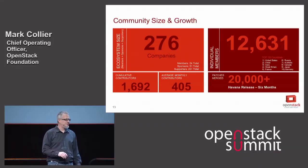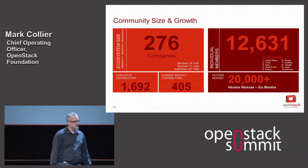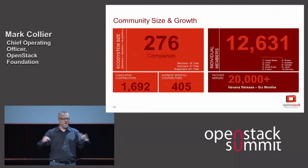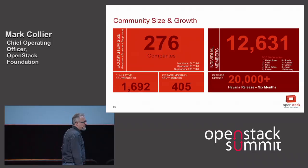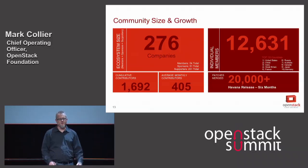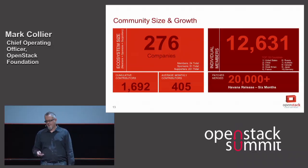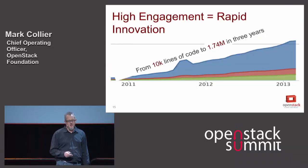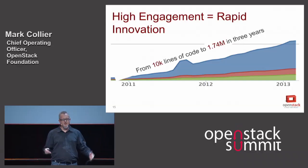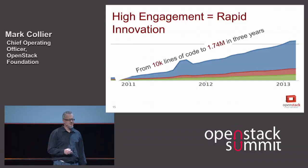We think of our community as having many different stakeholders: developers, users — perhaps the most important — and our ecosystem. We've already seen over 1,600 contributors, about 400 a month. Here are just a few of the companies in our ecosystem — a lot of names you'll recognize. All that engagement and development really fuels innovation: in a little over three years, the project has gone from 10,000 lines of code to 1.7 million. That growth is driven by the community and the process we use here to plan the next version, Icehouse.